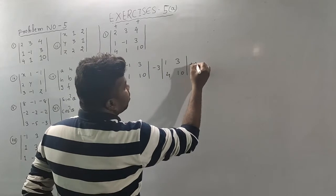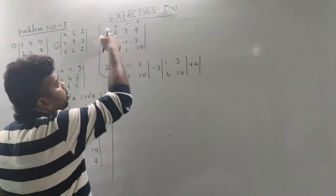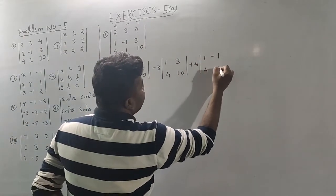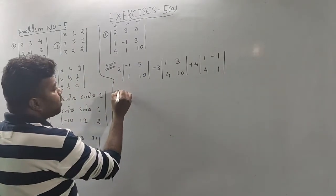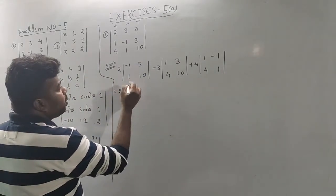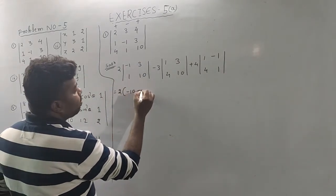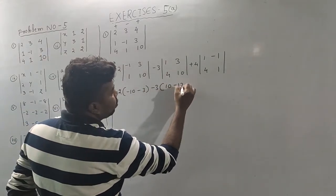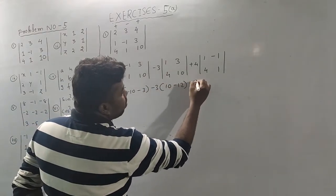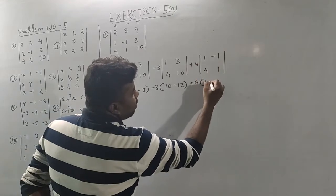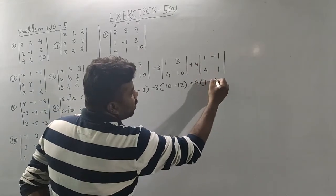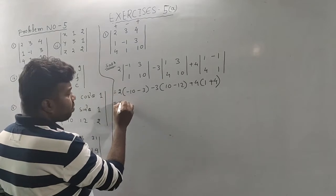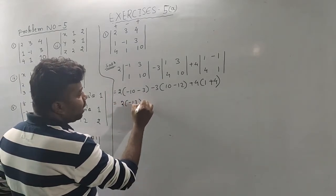Then plus 4, plus 4. Then column 1, minus 1, 4, 1. So simply expand: 2 into minus 3, minus 3. Then minus 12, plus 4. 1 into 1 is 1. Minus minus 1 is plus. Then minus 1 is plus. Then minus 3, minus 3.